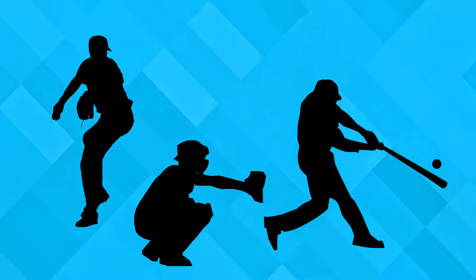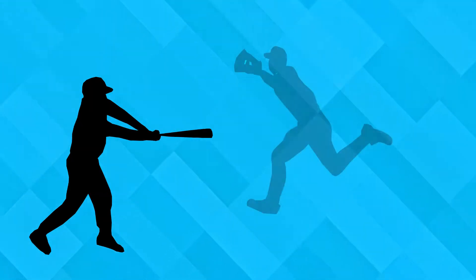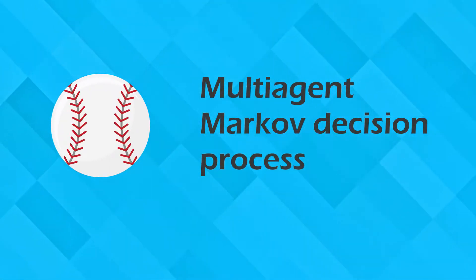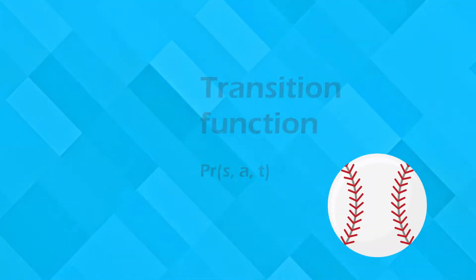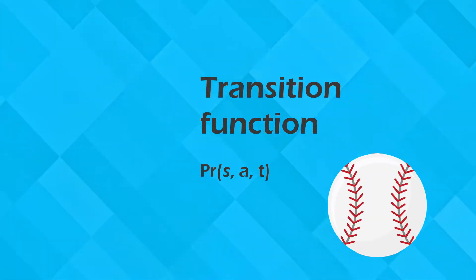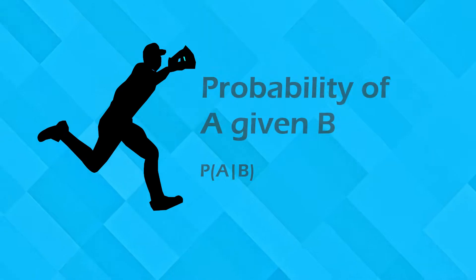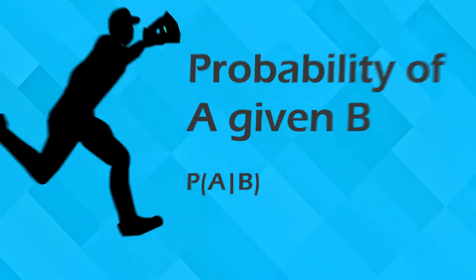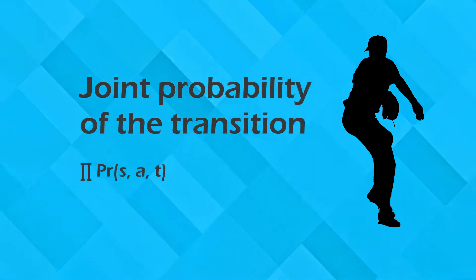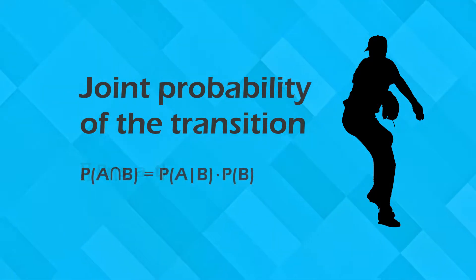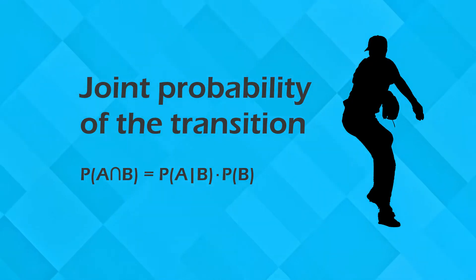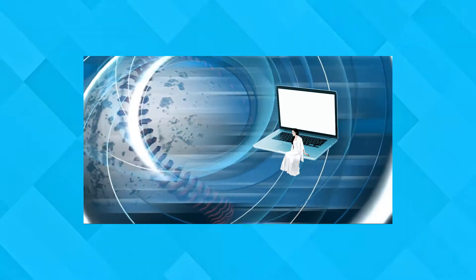The agents learn optimal policies through repeated interaction. Baseball players of one team play different roles. I calculate the coordinated policy by processing multi-agent Markov decision processes. The transition function calculates the probability of a transition from one state to the subsequent state given the joint action of the agents. The probability of s given a designates the probability of the transition to one state of one agent. The joint probability of the transition of states is the product of the probabilities of s given a, calculating the joint action of individual agents and the likelihood of two events occurring at the same time.